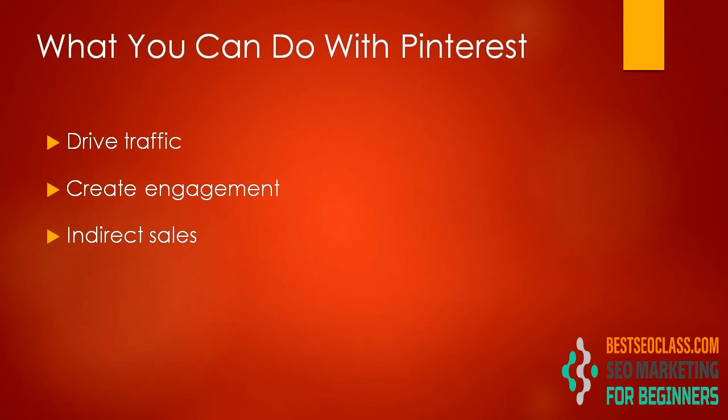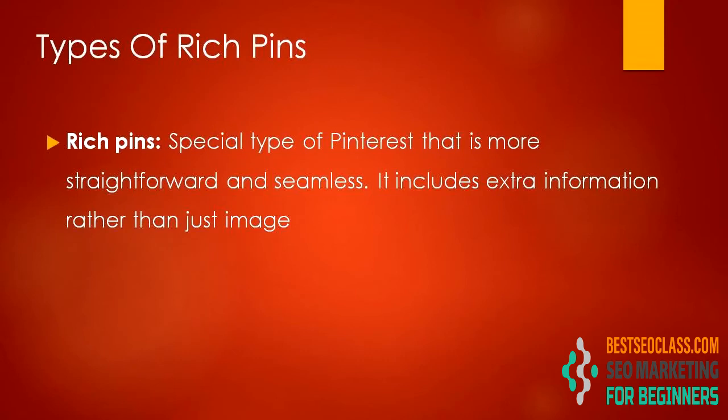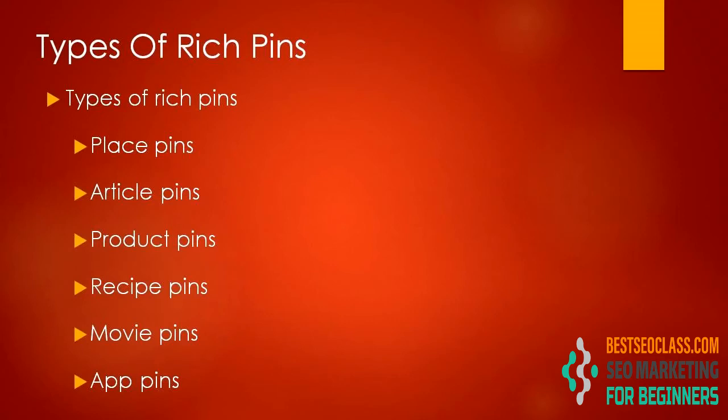Besides normal pins, Pinterest also offers a feature named rich pins for you to categorize your pins. Rich pins are a special type of pin that is more straightforward and informative — it includes detailed information rather than just plain images. There are six types of rich pins on Pinterest: place pins, article pins, product pins, recipe pins, movie pins, and app pins.